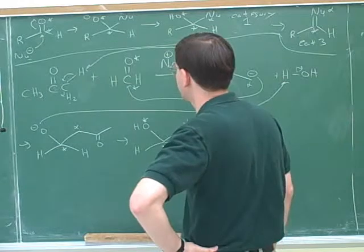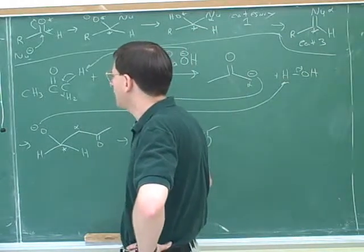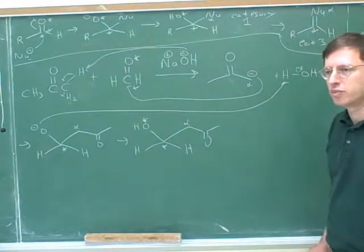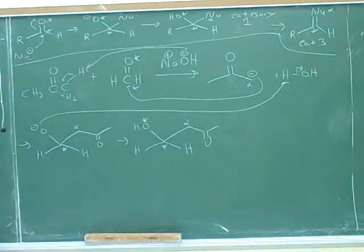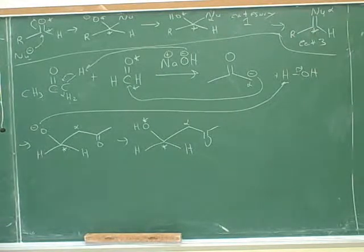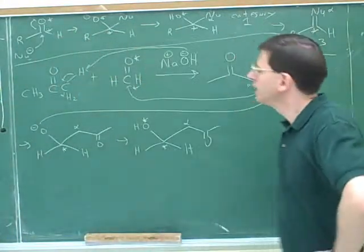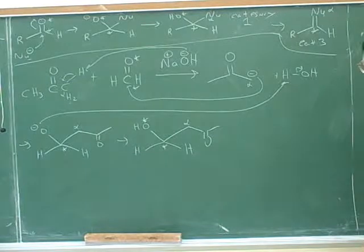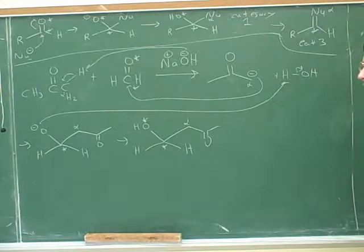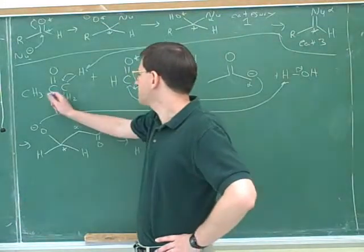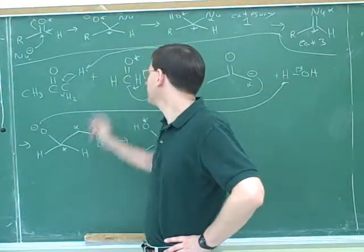Let's think about the steps here. This is what's called a crossed aldol reaction. It's called 'crossed' because here we have two separate aldehydes or ketones reacting with each other. The first example we did was one aldehyde reacting with another version of the same thing — that's not the crossed case. A crossed aldol reaction is when two different aldehydes and ketones react with each other, so there are some new complications. You made this left-hand molecule into the enolate — correct. Why not the other one? Because there's no alpha carbon.